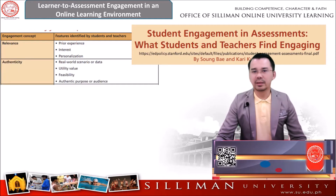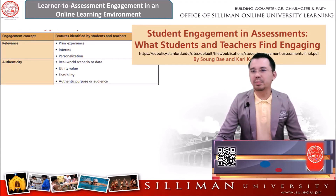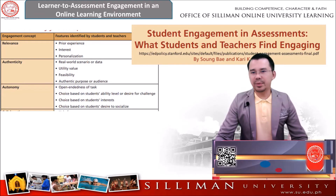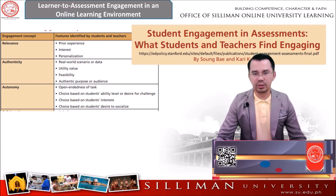The second engagement concept is authenticity, which refers to real-world scenarios or data. The assessment we provide should have utility value, visibility, and authentic purpose or audience. The third engagement concept is autonomy — our assessment should have open-endedness of tasks, choice based on students' ability level or desire for challenge, choice based on students' interest, and choice based on students' desire to socialize.